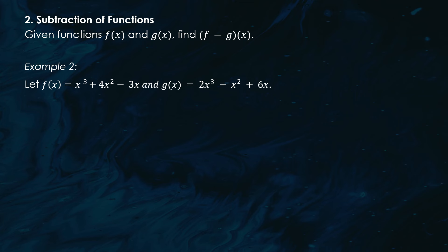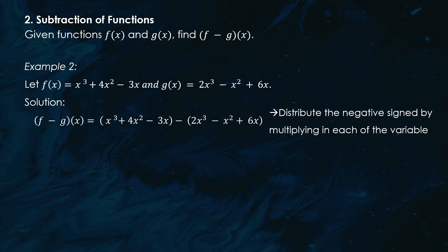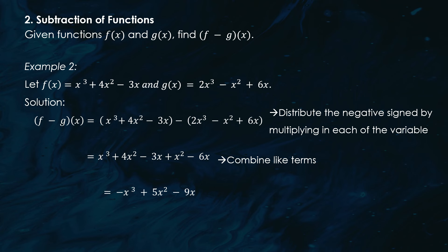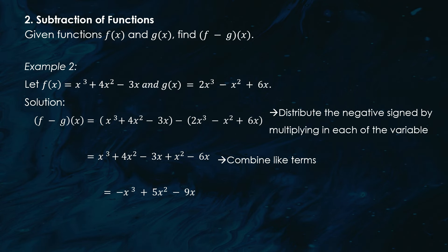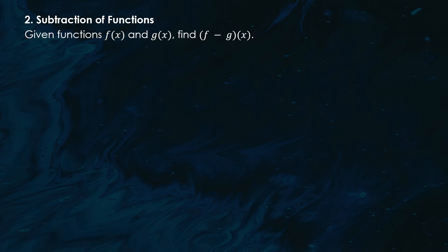Another subtraction example: let f(x) = x³ + 4x² − 3x and g(x) = 2x³ − x² + 6x. To find (f − g)(x), we subtract g(x) from f(x): (f − g)(x) = x³ + 4x² − 3x − (2x³ − x² + 6x). Distributing the negative sign and combining like terms gives us −x³ + 5x² − 9x.